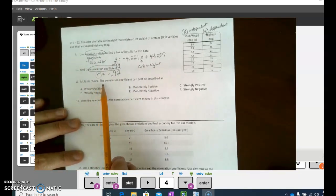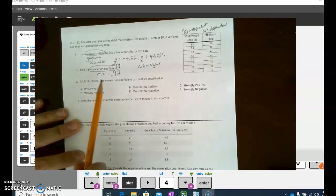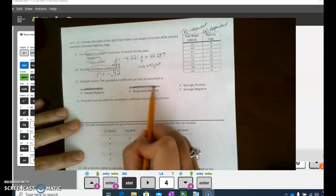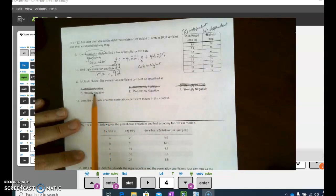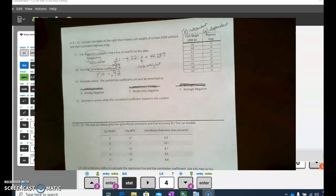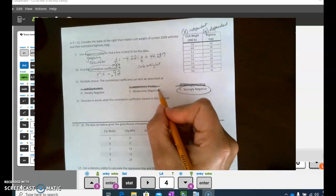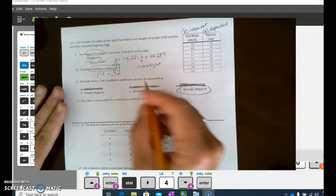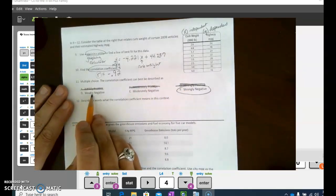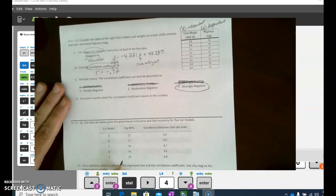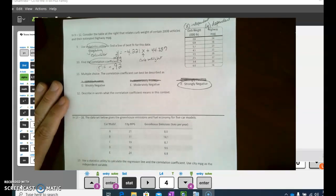So let's look at our multiple choice question. It says the correlation coefficient can best be described as. Well, first of all, it's negative. So if it says positive, I can eliminate those choices. Is it weakly negative, moderately negative, or strongly negative? I would say anything that is 0.9 and close to, well, in this case, negative 1 - if it was positive, it would be close to 1. Because it's 0.9, I'm going to say it's strongly negative. If it was in the 0.8s or 0.7s even, I would say moderately negative. And anything below 0.7 is weakly negative.